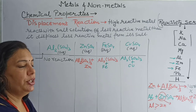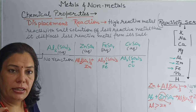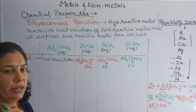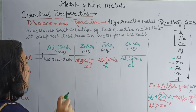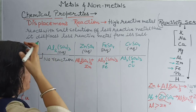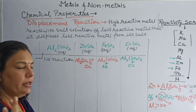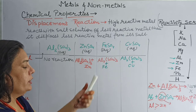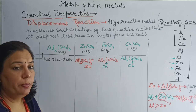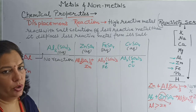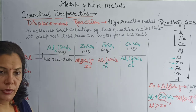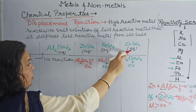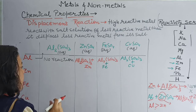These reactions are best identified by color change. Aluminium sulfate is almost colorless. Zinc sulfate is colorless. Iron sulfate is green in color. Copper sulfate is blue colored solution.